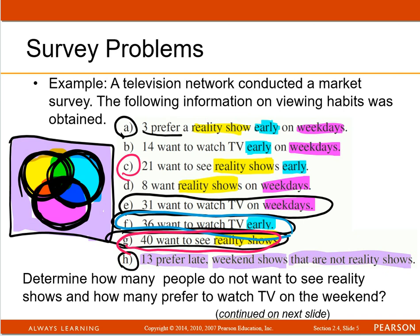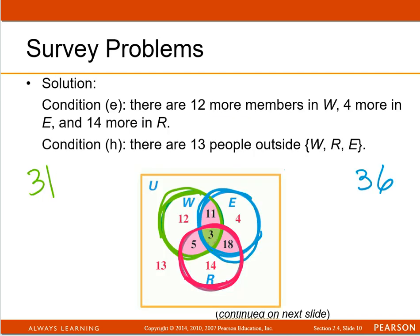And then the purple color here, this one which is reality. Where was reality? Reality shows right here. 40 people want to see reality, okay, so 40 for that. Now, right now.